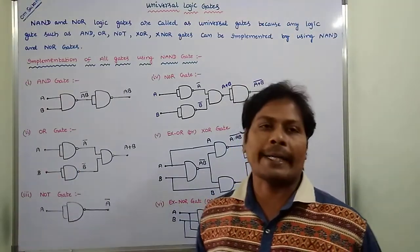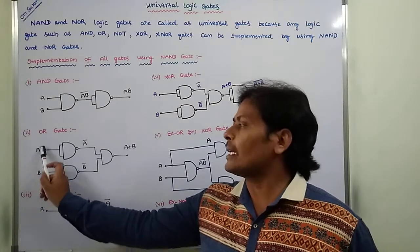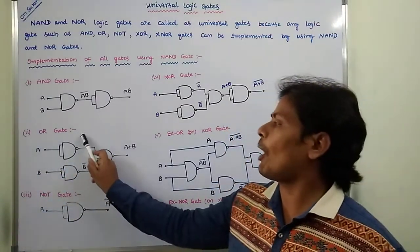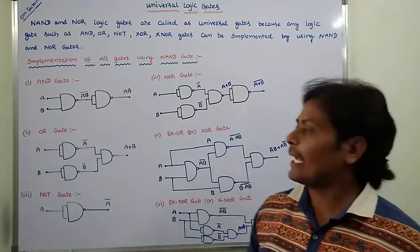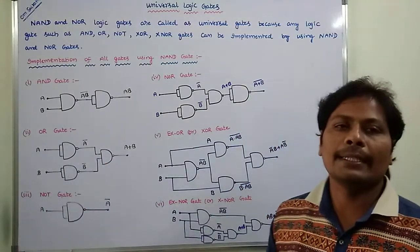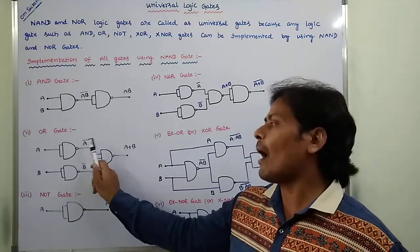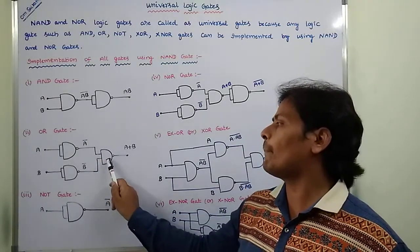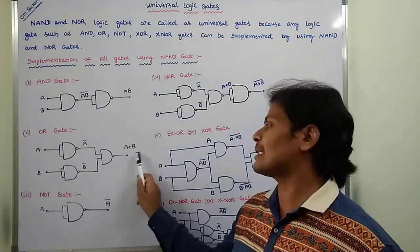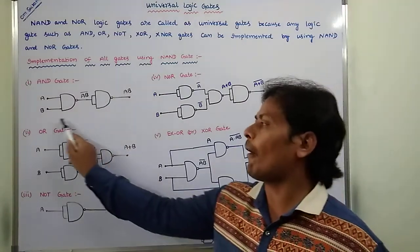Second one is OR gate. Here, one input A can be applied to the NAND gate, then we are getting the output A bar. Second input B applied to only one NAND gate, then we are getting B bar. A bar and B bar again applied to the NAND gate, then we are getting A plus B. So this is the output of the OR gate.